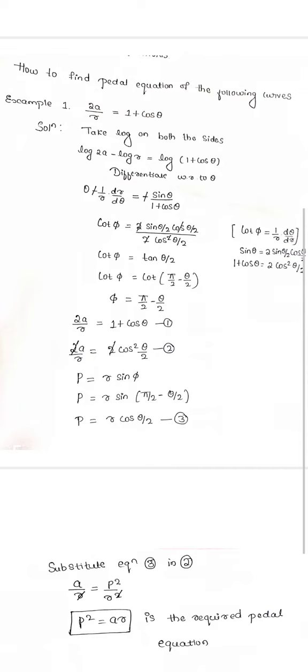Cot φ is equal to 2 sin(θ/2) cos(θ/2) divided by 2 cos²(θ/2). We know that sin θ equals 2 sin(θ/2) cos(θ/2), and 1 plus cos θ equals 2 cos²(θ/2). When we simplify, cot φ equals cot(π/2 minus θ/2), so we get the φ value as π/2 minus θ/2.